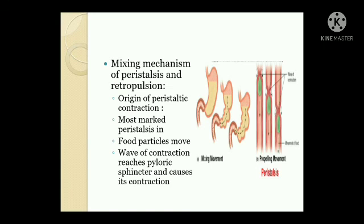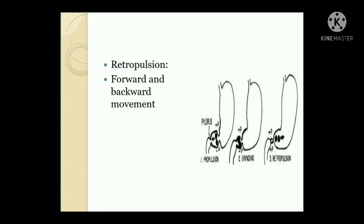Peristaltic waves originate in the mid-stomach and proceed caudally, with the most marked peristalsis in the distal half of the stomach. Food particles move towards the pylorus along with the deep wave of contraction. When the wave reaches the pyloric sphincter, it causes contraction before food arrives — retropulsion. Food strikes against the closed pyloric sphincter with force; most antral content is forced back into the body of the stomach, and only a small amount of chyme passes to the duodenum. This forward and backward movement breaks gastric contents into small food particles, mixed with gastric secretion, forming a semi-liquid paste known as chyme.